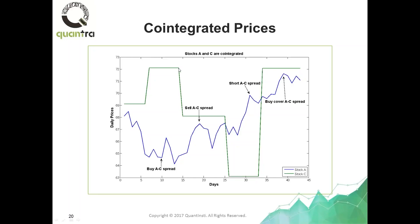Now here is an example of two co-integrated stocks that are not correlated — Stock A and Stock C. Stock A is again the blue line, and Stock C is the green line. When Stock A goes down, Stock C may go up; when Stock C goes down, Stock A may go up. They are not correlated — maybe anti-correlated — but sometimes when Stock C doesn't move, Stock A still goes up and down. Sometimes they go in the same direction, sometimes opposite. Overall, they don't have any significant correlation of returns.